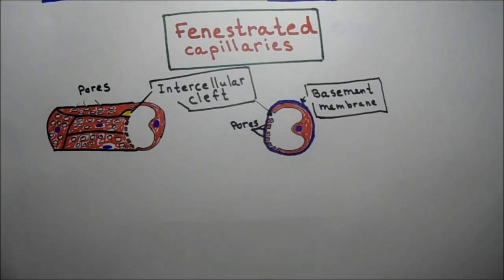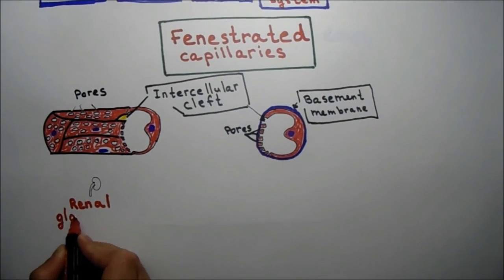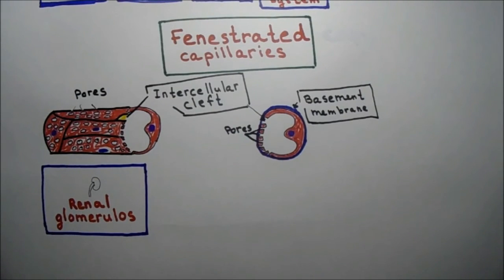And the question is why do we need these pores here? This type of capillary is found in the renal glomerulus. Logically you have to figure out why do we need these pores there. These pores allow small molecules and limited amounts of proteins to diffuse through the renal glomerulus.